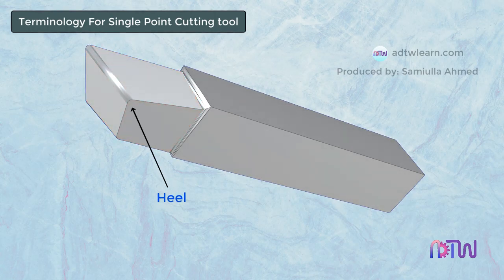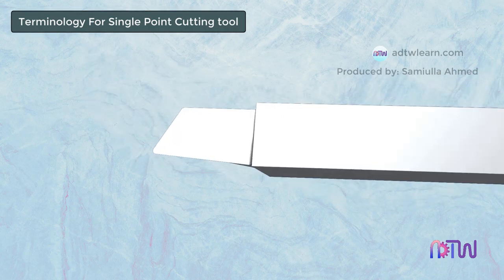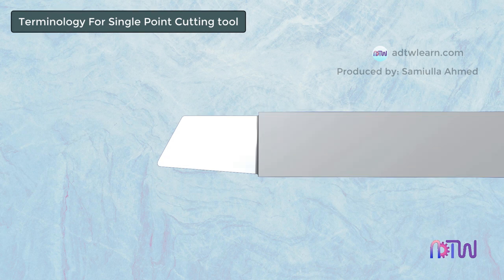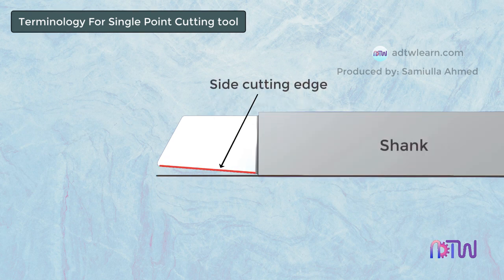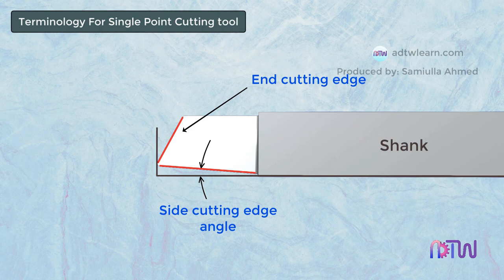Apart from these terms, some other terms are used to describe the different angles. The angle made by the side cutting edge with the shank is called the side cutting edge angle.